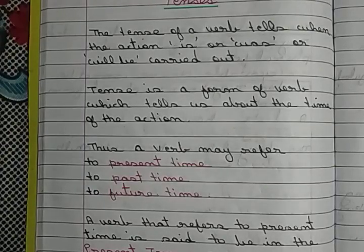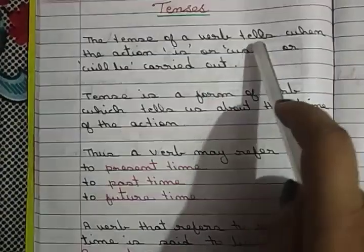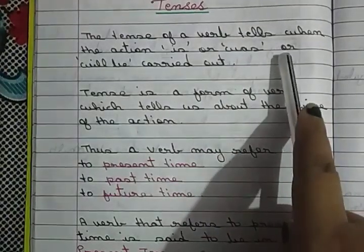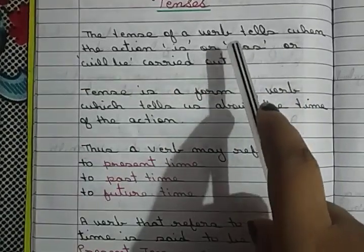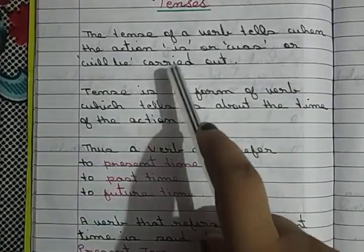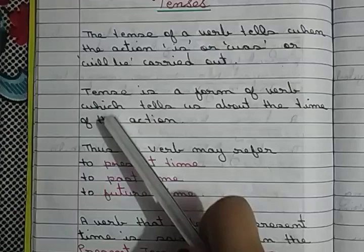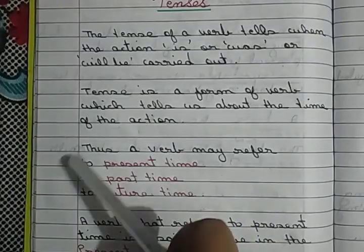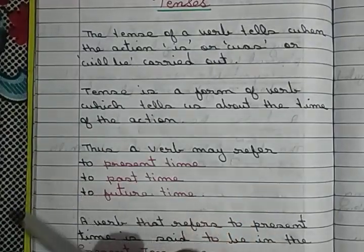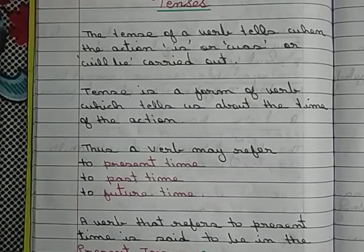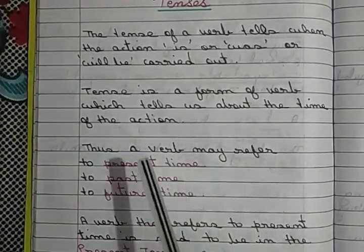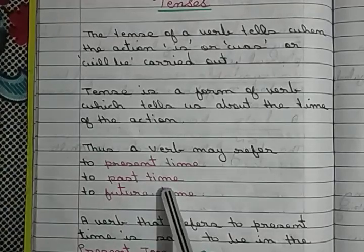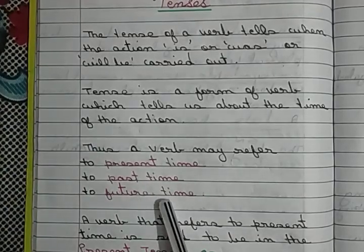Hello everyone, this is video number 37 and our topic is tenses. The tense of a verb tells when the action is, was, or will be carried out. Tense is a form of verb which tells us about the time of the action. Thus a verb may refer to present time, past time, or future time.